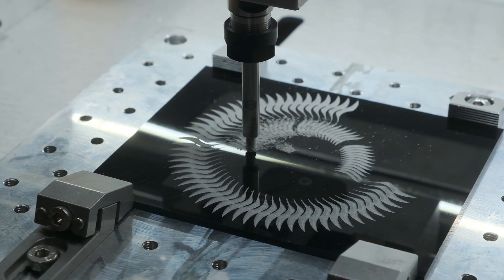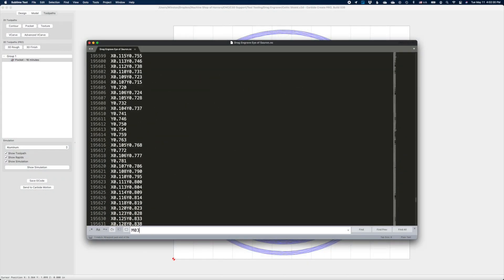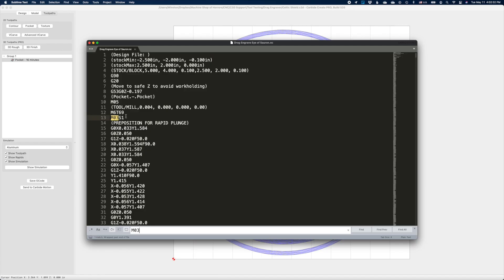On the Nomad, you'll need to do a little bit of G-code editing to ensure that the spindle does not turn on. Open up your G-code file in any text editor and remove any line that includes the M3 command, as that is what triggers the spindle to turn on.